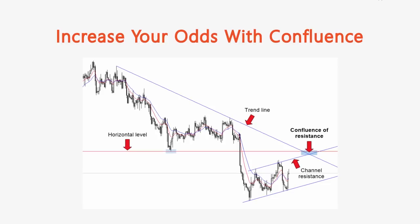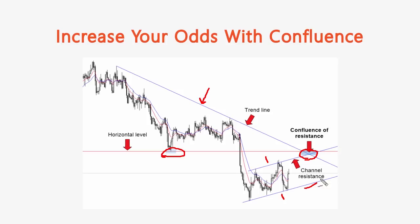Here's a great example I commented on previously. We have a trend line and a horizontal level — just two levels are enough to create an area of confluence. In this case we also had an ascending channel. What's great about this kind of setup is that no matter what the market does, you can trade it: if price comes up into this area, look for sell signals; if it closes below, look to sell. If the market closes above this area of confluence, we could have a potential long opportunity as the market breaks out.